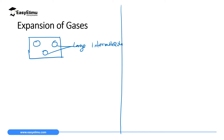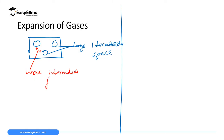This large intermolecular space between the particles is caused by what we call weak intermolecular force between the particles. Now if you increase the temperature of a gas...